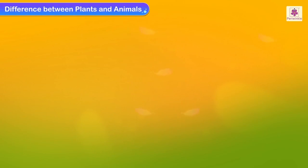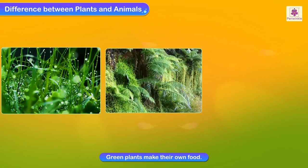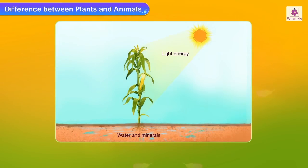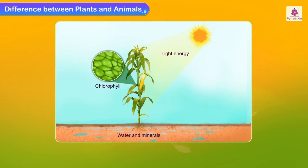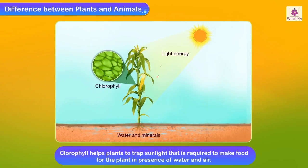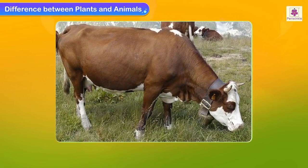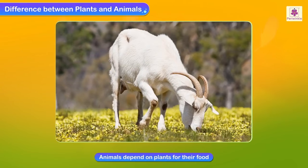Green plants make their own food and are called the producers on the earth. The green pigment chlorophyll is found in their leaves. Chlorophyll helps plants to trap sunlight, which is required to make food for the plant in the presence of water and air.